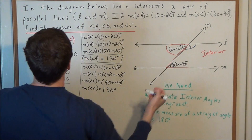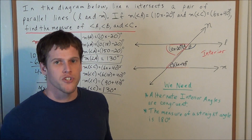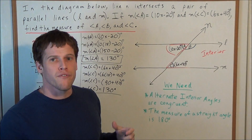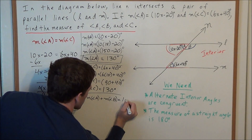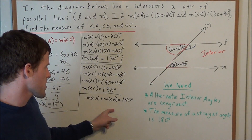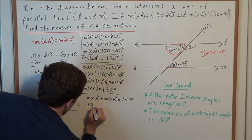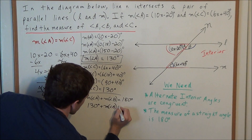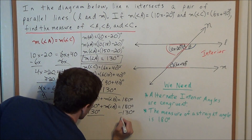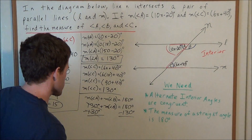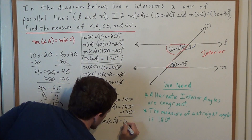Now the last step is to find the measure of angle B. To do this, we're going to use the Euclidean postulate: the measure of a straight angle is 180 degrees. Observe that angle A and angle B form a straight line, so the measure of angle A plus the measure of angle B equals 180 degrees. Substituting 130 degrees for angle A: 130 degrees plus the measure of angle B equals 180 degrees. Subtracting 130 degrees from both sides gives us the measure of angle B equals 50 degrees.